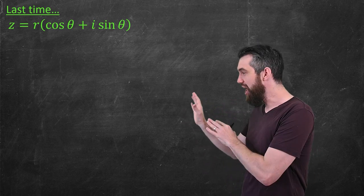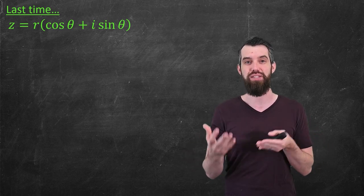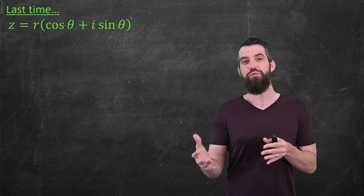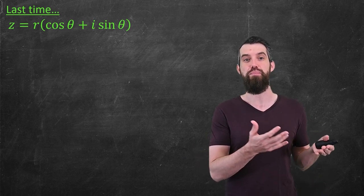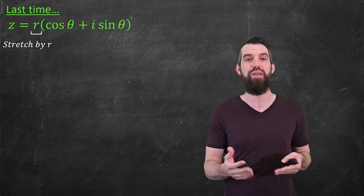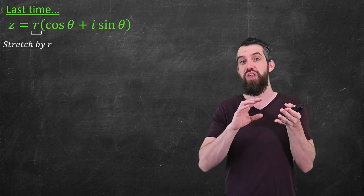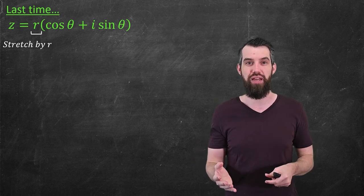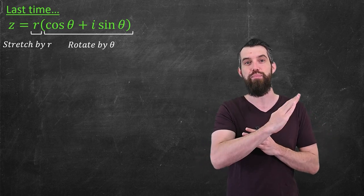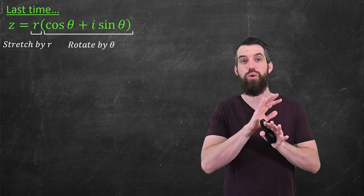Last time we saw that complex numbers could be represented as some length r times cosθ + i sinθ. This representation was particularly nice because we could understand what was going on geometrically in a very transparent way. The r, the real number out the front, represented stretching by r — if you take some complex number and multiply it by z, the r portion causes a stretching in the complex plane. The cosθ + i sinθ portion, when you multiply by z, rotates whatever you started with by an angle θ. So complex number multiplication is just some combination of stretches and rotations.